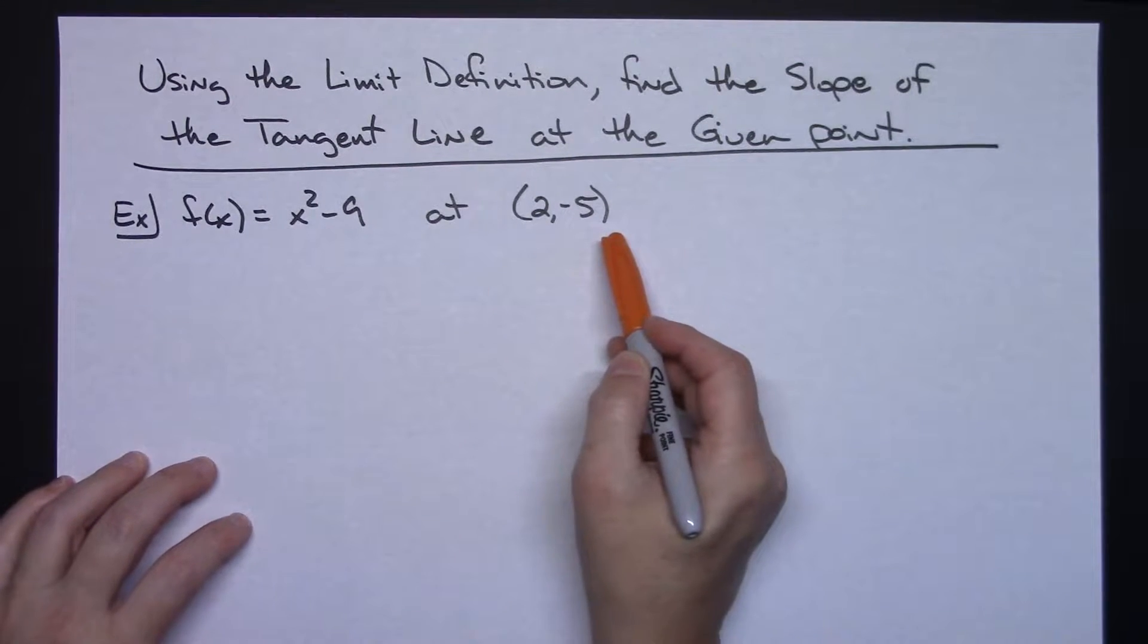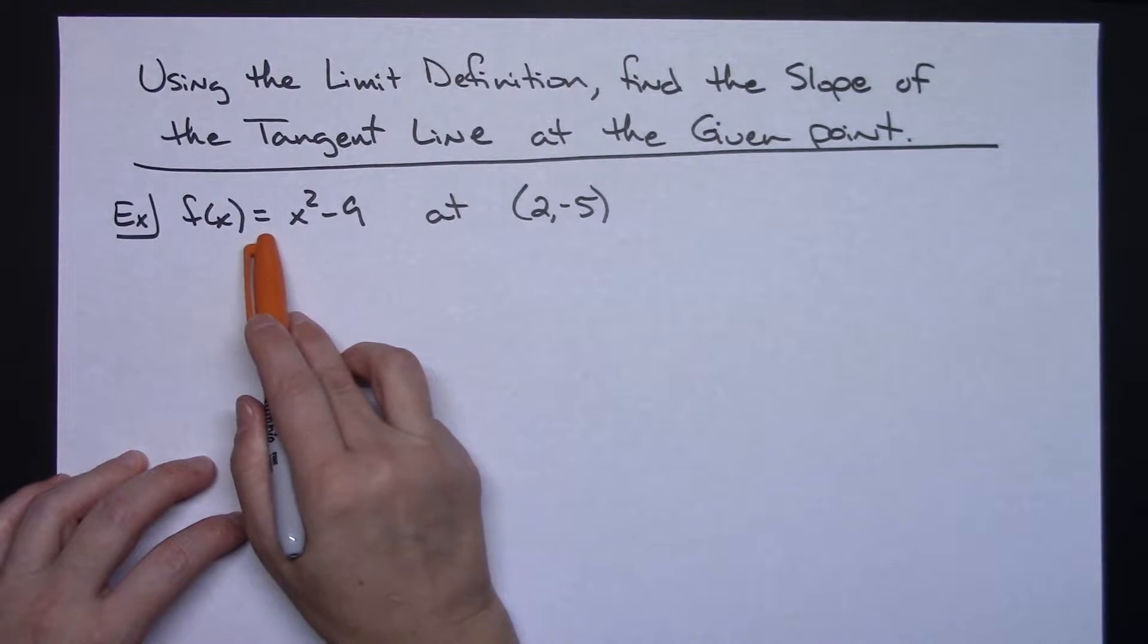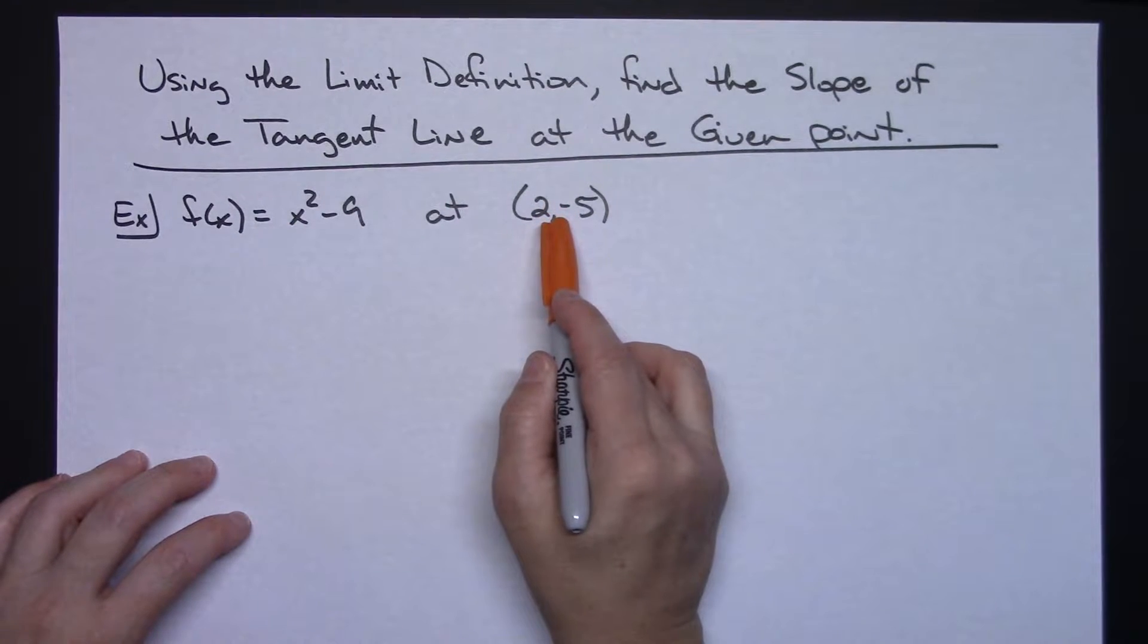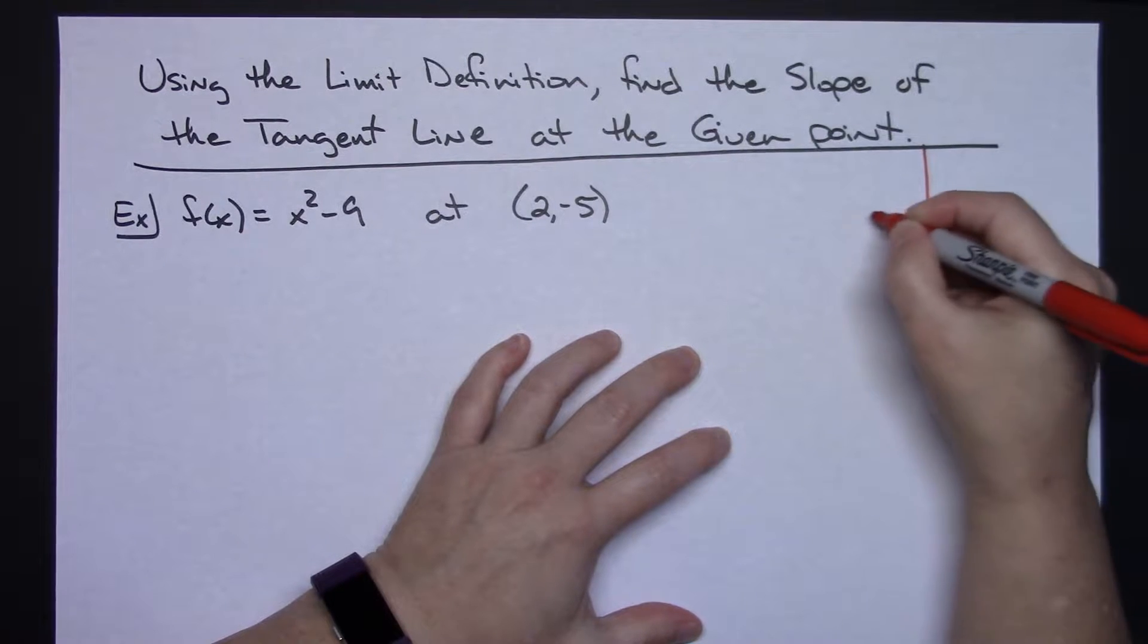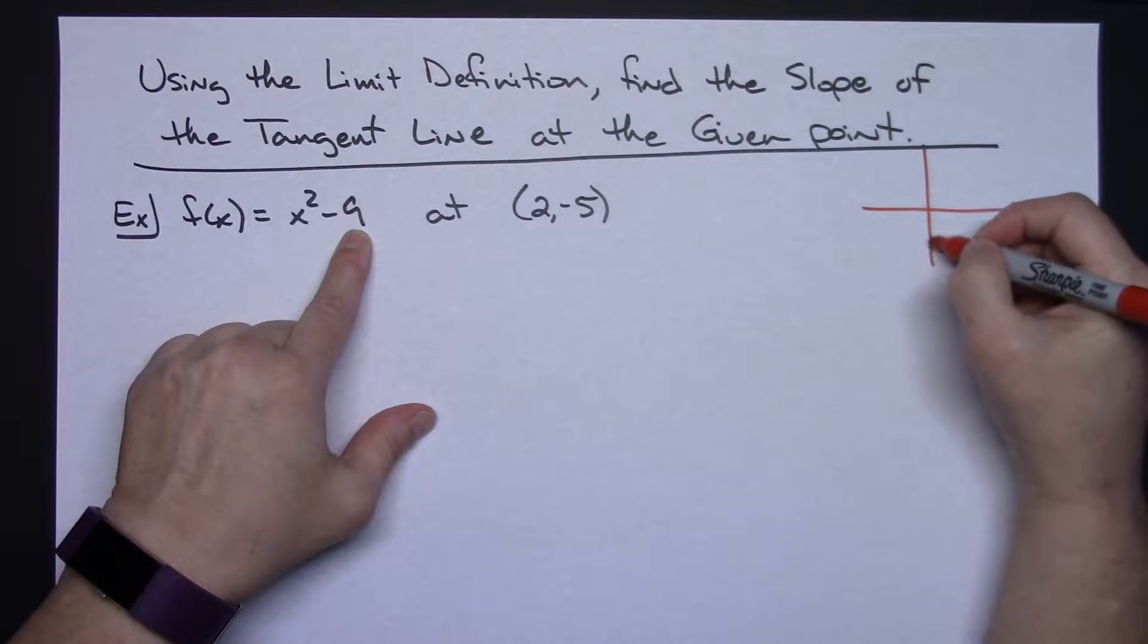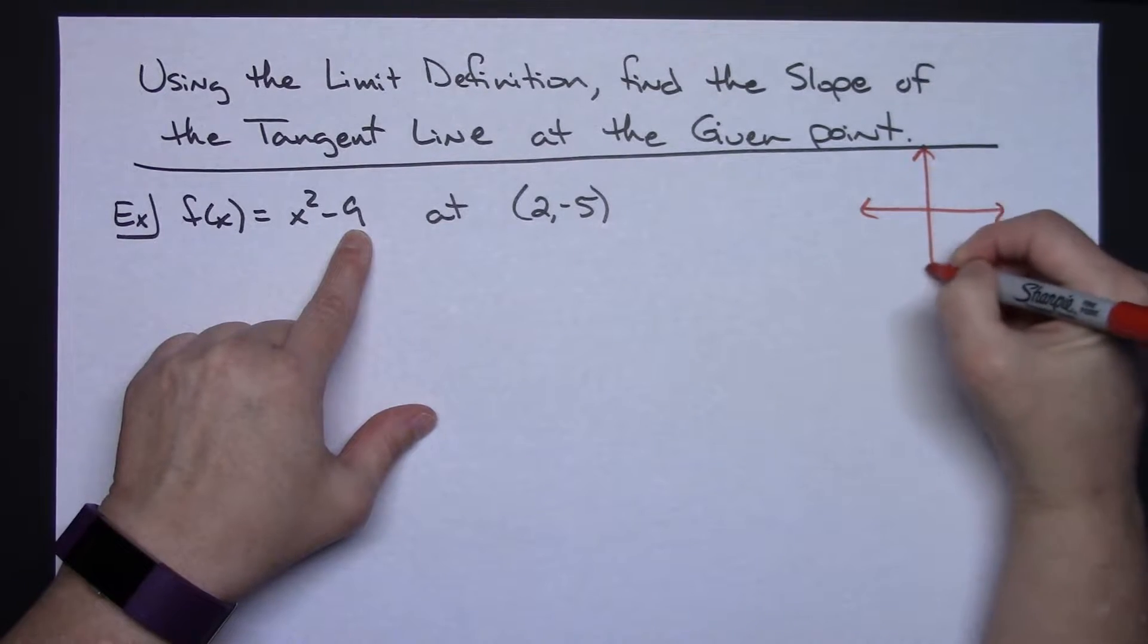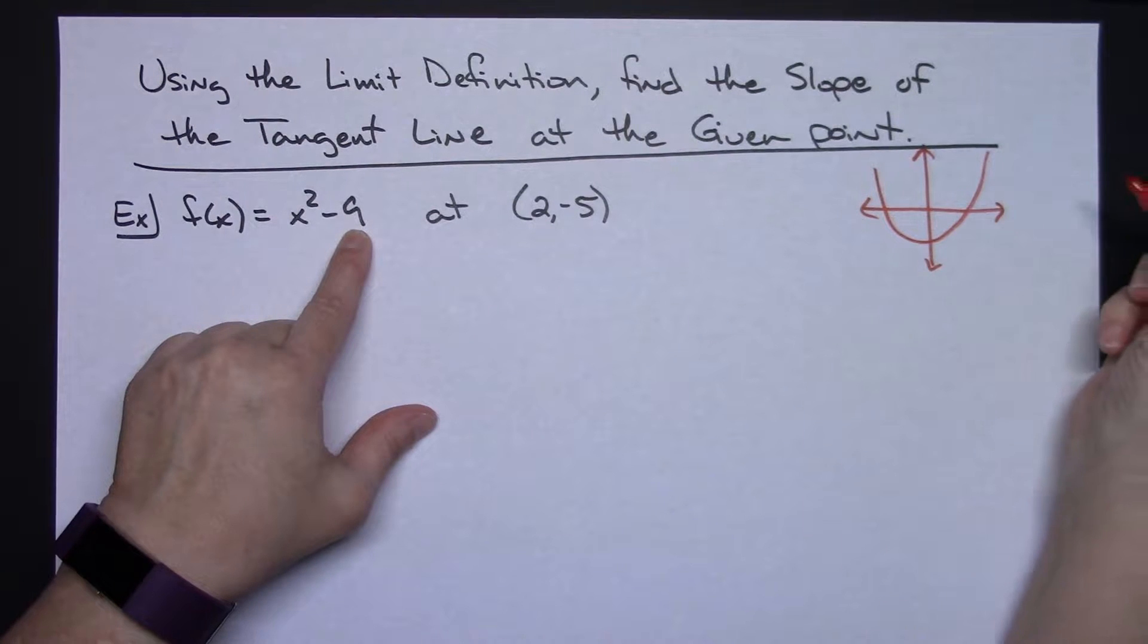They're going to give you a function and then a point, because I want the slope of the tangent line to this curve at this point. Let me actually sketch this out here. This is an upright parabola shifted down 9, so I could do a rough little sketch.